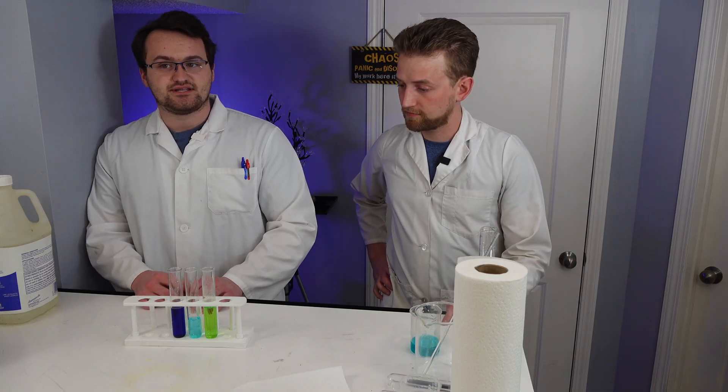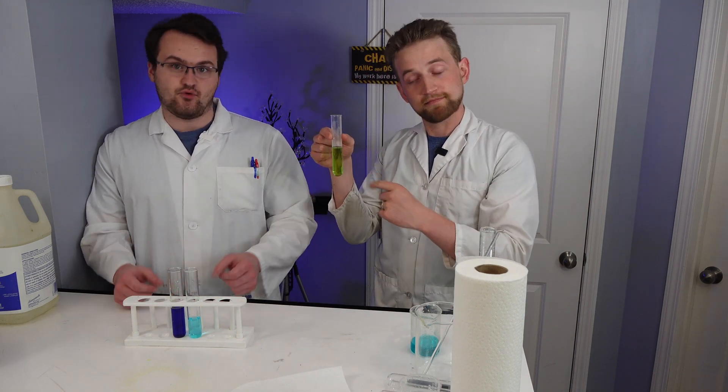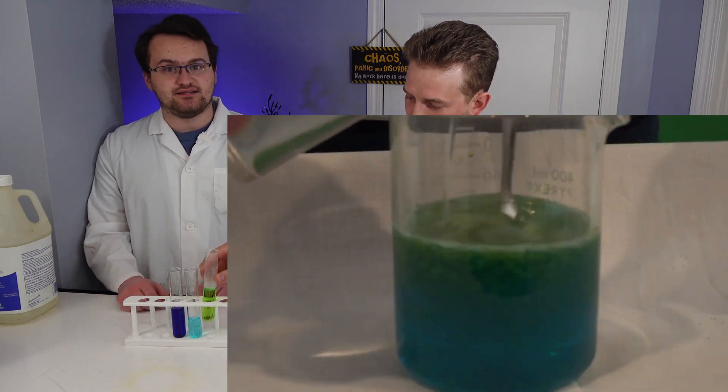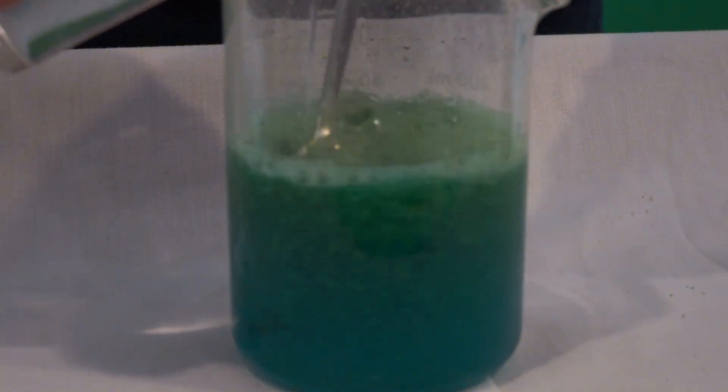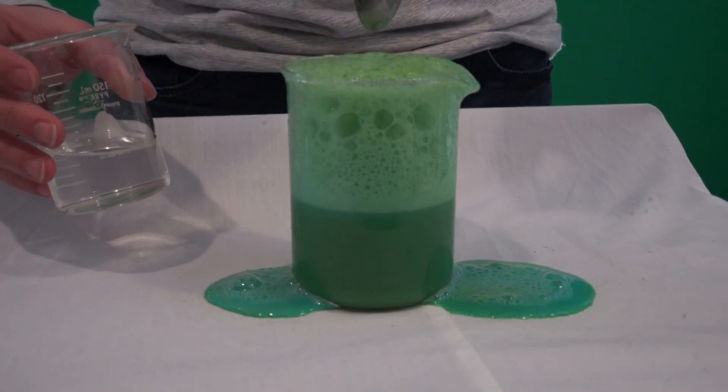So you may notice that when we were making copper carbonate, you may have seen a little bit of green forming. The reason for that is that we were adding hydrochloric acid to a copper solution, and so we were making some of this compound here. And that's why you were seeing flashes of green.